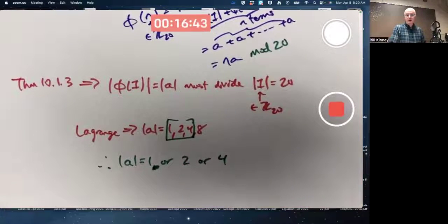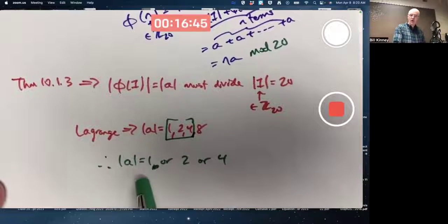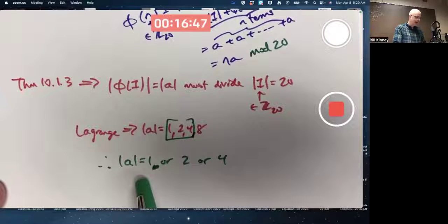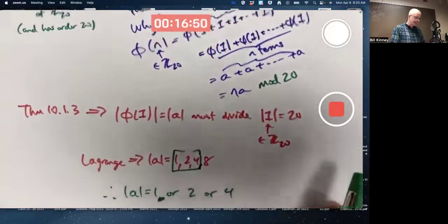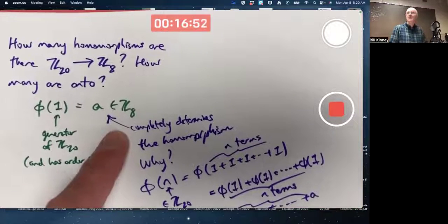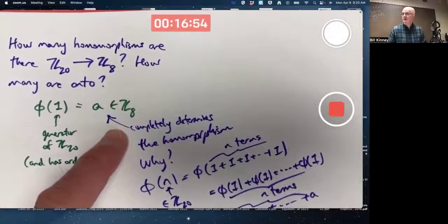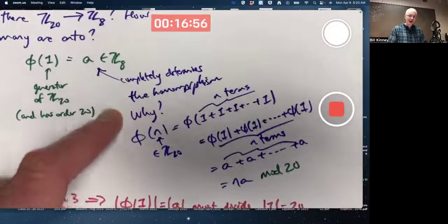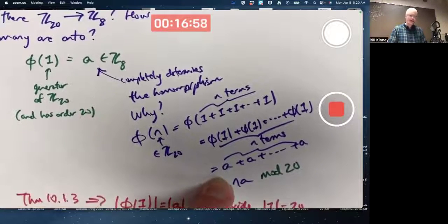So then the question is, what are the possibilities? If the order of A is one, then A is the identity element in Z8, which is zero. And that's going to imply that everything gets mapped to zero because n times zero is zero.